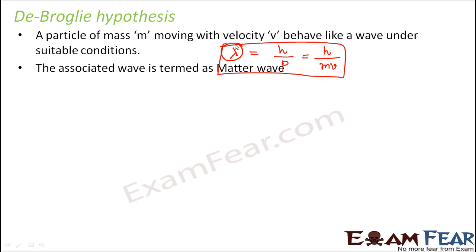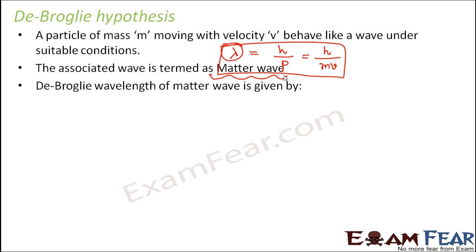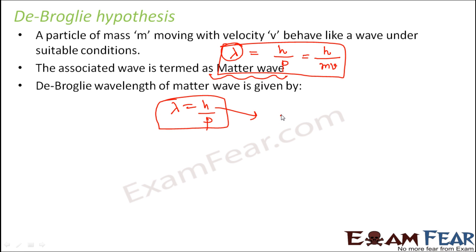The De Broglie wavelength of the matter wave is given by lambda equal to h by p. Here h is Planck's constant, which is 6.63 into 10 to the power minus 34 joule seconds.